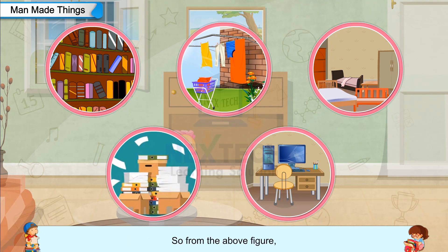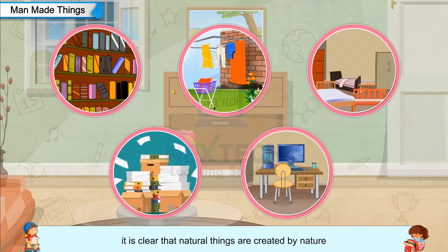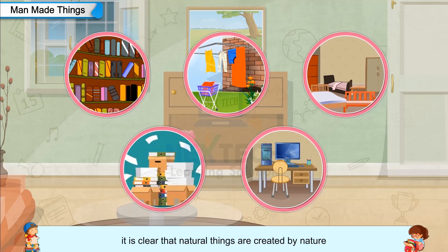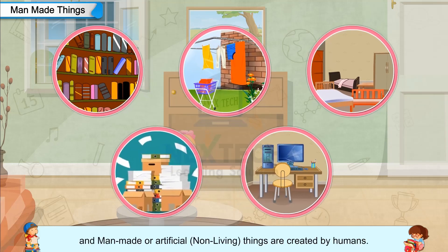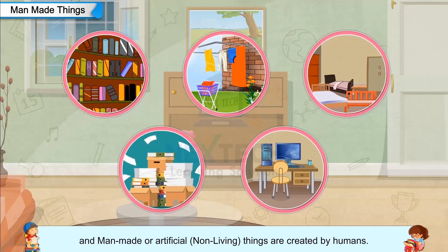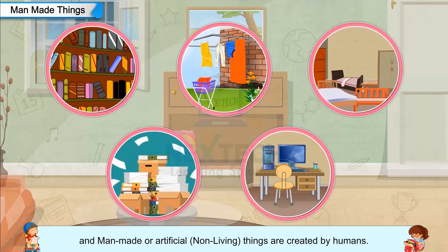So from the above figure, it is clear that natural things are created by nature, and man-made or artificial non-living things are created by humans.